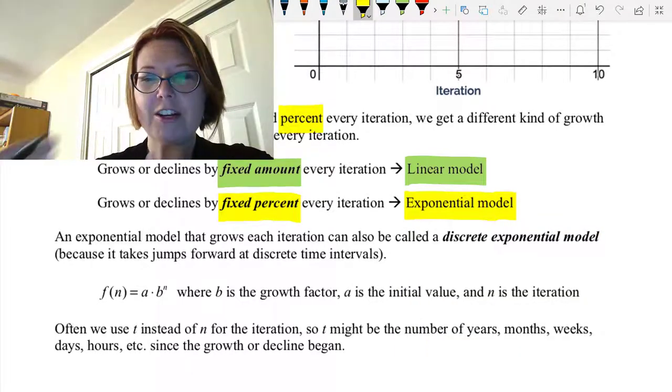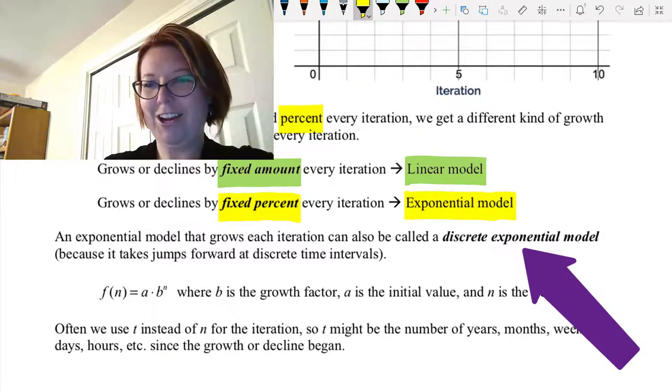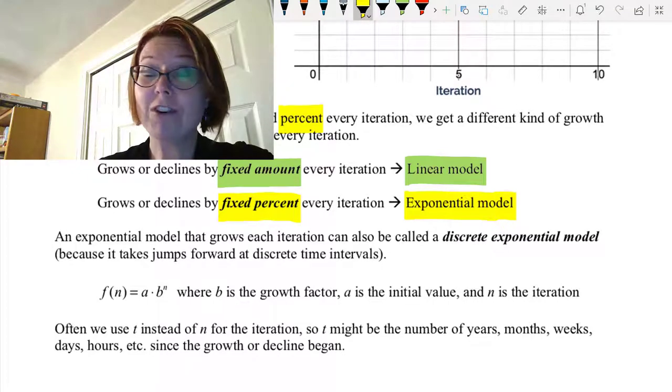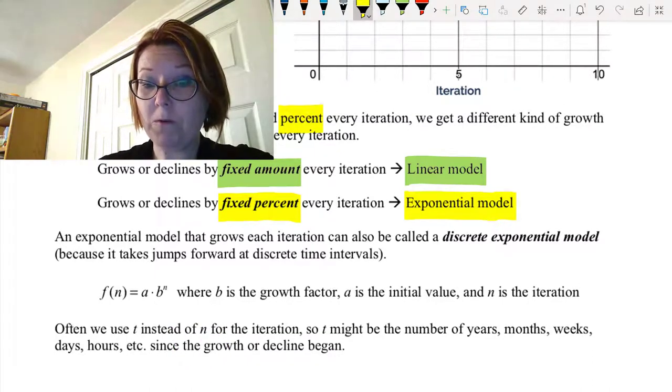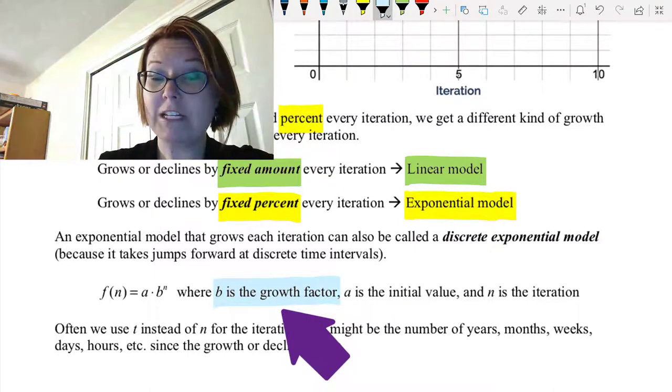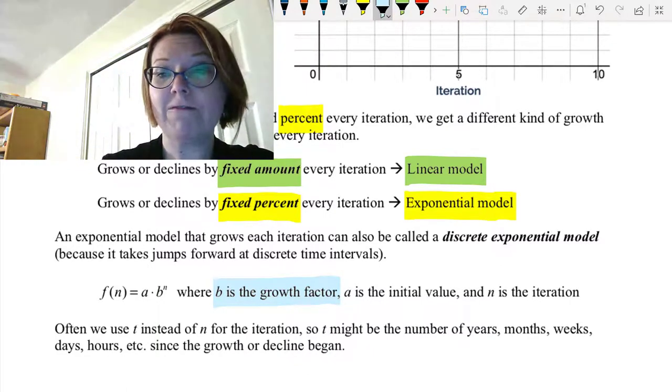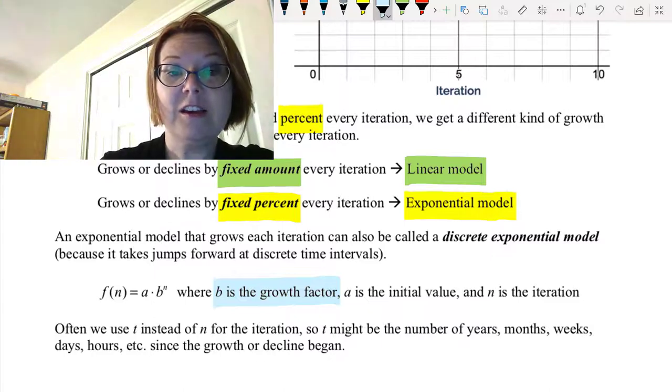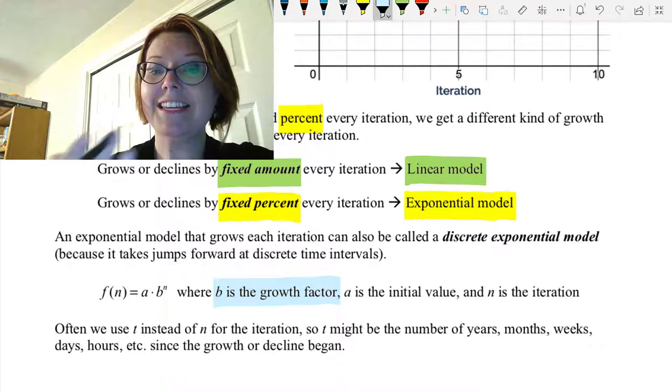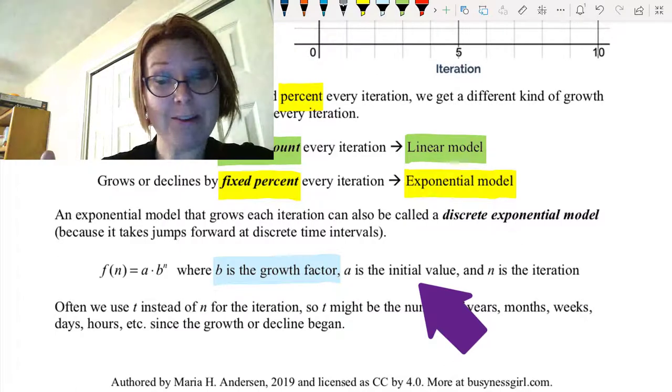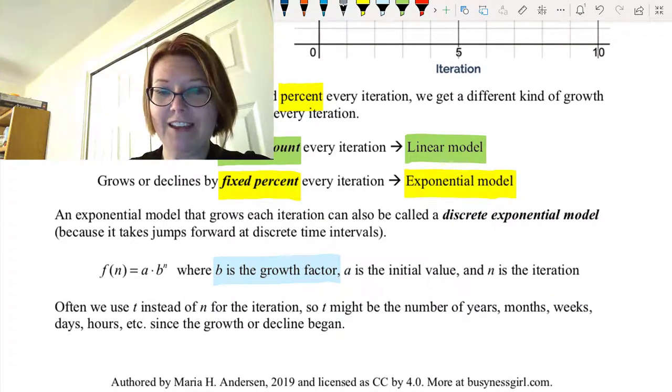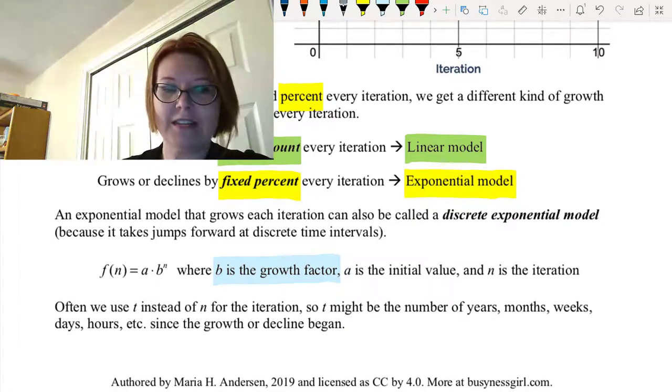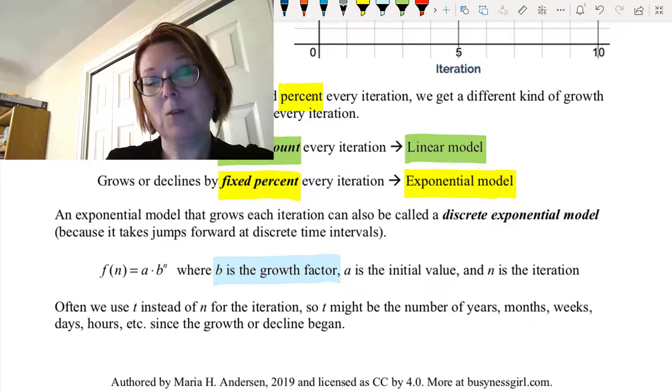When we grow every iteration, we actually call this a discrete exponential model because it makes jumps forward at distinct time intervals, at discrete time intervals. We can write the function in general as f of n equals a times b to the nth power. If we write it like this, then b is going to be the growth factor in our functions. That was the 0.93 for scenario 4 and the 1.10 for scenario 2. a is the initial value for scenarios 1 and 2, that was 100 houses. And for scenarios 3 and 4, that was 300 houses. And then n is the iteration number. We often will use t for time instead of n for iterations. So t could stand for years, months, weeks, days, hours, etc., since we begin the experiment or we begin measuring.